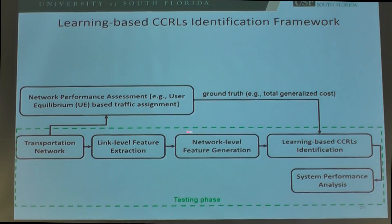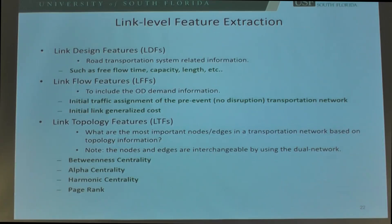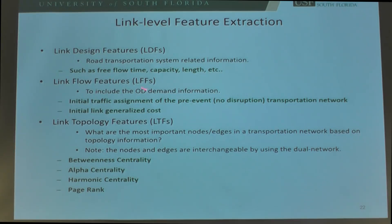Each network sample goes through a whole process including link-level feature extraction, network-level feature generation, and learning-based CCIRL identification. Those first two components extract information from the networks, and the third component uses that information to build the learning models. In the testing phase, we don't have the ground truth, but we use the learned model to predict the system performance of a given transportation network sample.